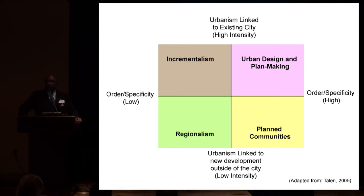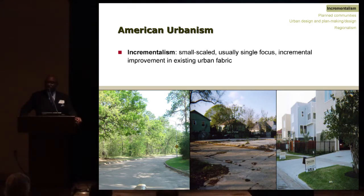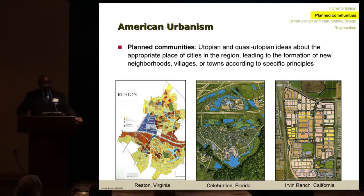Many solutions have been proposed over time. I find Emily Tallinn's classification useful, categorizing them by specificity and whether they are linked to an existing urban area. There are four types of intervention: incrementalism, which is where most of us work — urban plazas, greenways — small incremental changes in the urban fabric; and trying communities that address managing growth at the outskirts of cities.